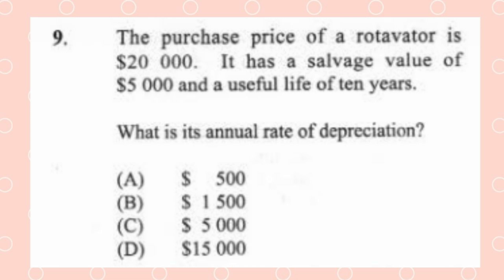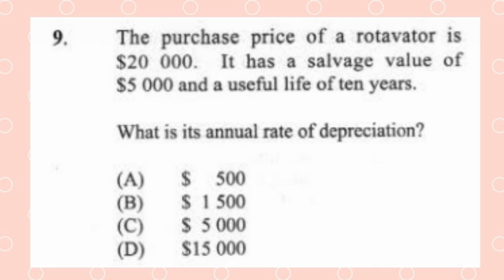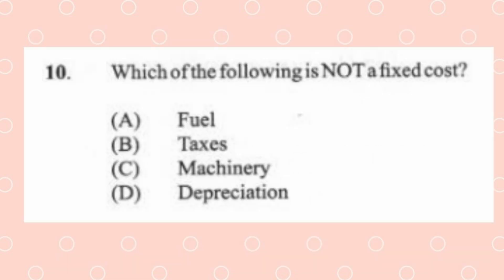Question 9: The purchase price of a rotovator is $20,000, it has a salvage value of $5,000, and a useful life of 10 years. What is its annual rate of depreciation? The answer is B, $1,500. The formula is: (cost minus salvage) divided by useful life. So (20,000 − 5,000) ÷ 10 = $1,500 per year. The machine loses $1,500 in value each year. Salvage value means the scrap value of the material after full depreciation.